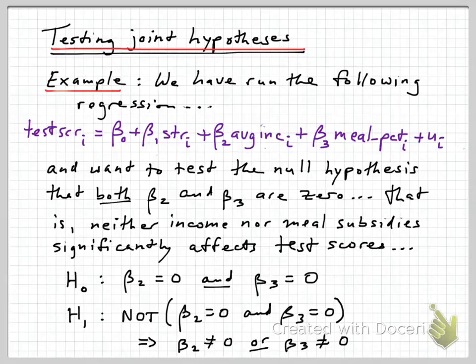So that would be a null hypothesis such as this one: H₀: β₂ = 0 and β₃ = 0. We call that a joint hypothesis because it involves those two different parts. Now the alternative hypothesis, H₁, is what's true if the null is not true: NOT (β₂ = 0 and β₃ = 0). That can happen either because β₂ ≠ 0, or β₃ ≠ 0, or both are not equal to zero.